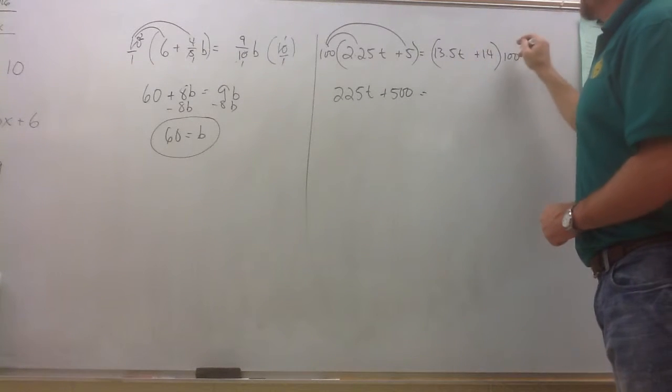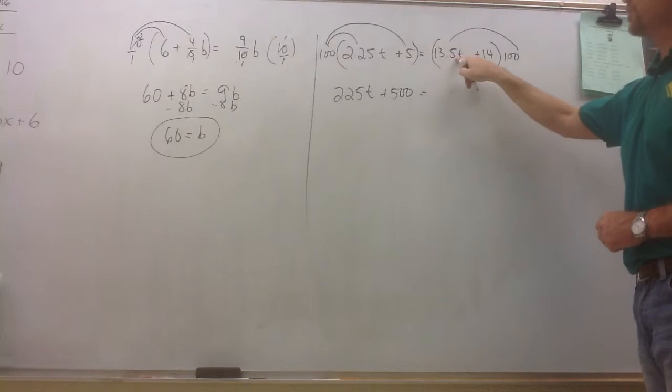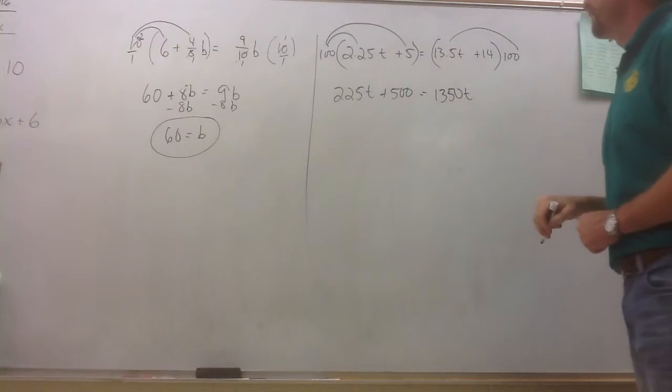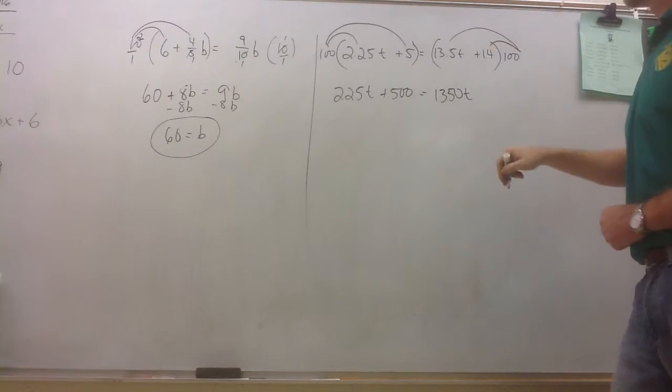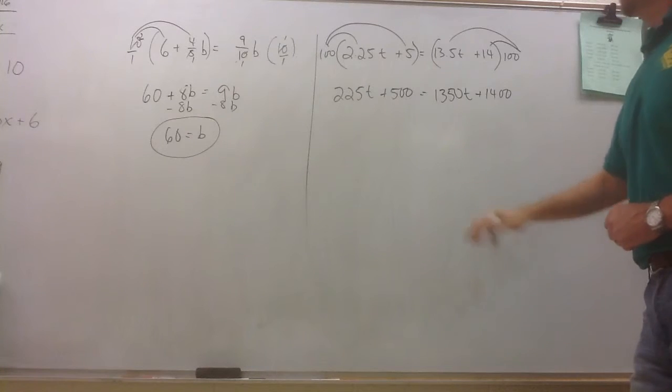Same thing on the other side. 100 times 13.5t. Remember, we've got to move this two decimal places. That's going to give me 13.50t. And 100 times a positive 14 is 1,400.